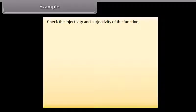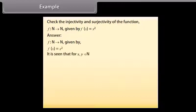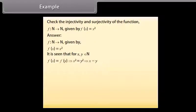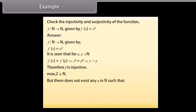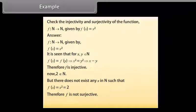Example. Check the injectivity and surjectivity of the function f from N to N given by f(x) = x². Answer. For f(x) = f(y), x² = y² implies x = y. Therefore, f is injective. Now, 2 belongs to N but there does not exist any x in N such that f(x) = x² = 2. Therefore, f is not surjective. Hence, function f is injective but not surjective.